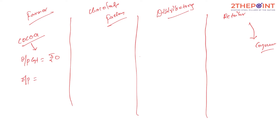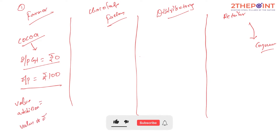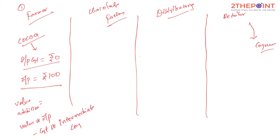The farmer's input cost is zero because the farmer uses free natural resources. The valuation formula is simple: Value Addition = Value of Output minus Cost of Intermediate Consumption, where intermediate consumption means raw materials and intermediate goods. So the value addition by the farmer is rupees 100.